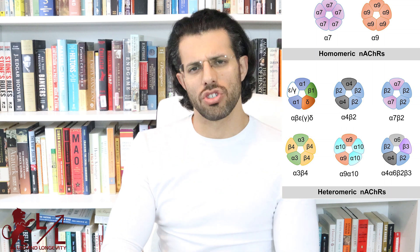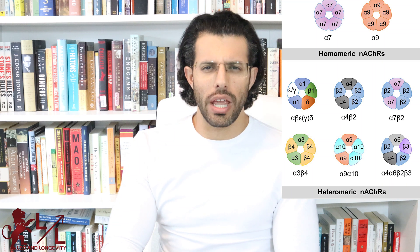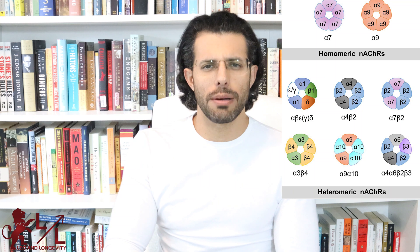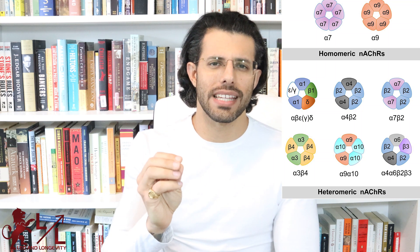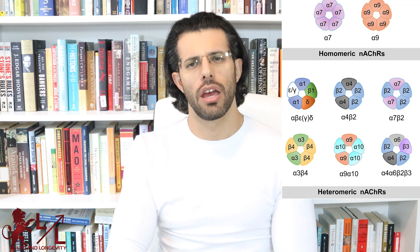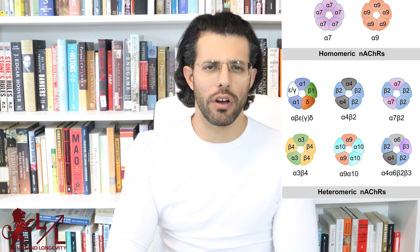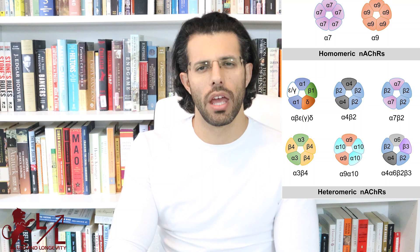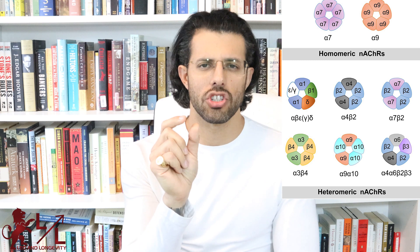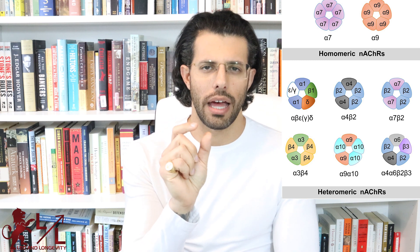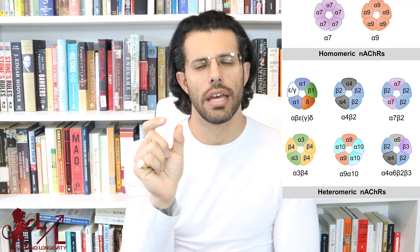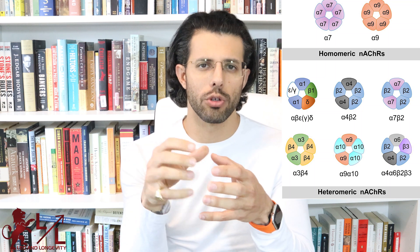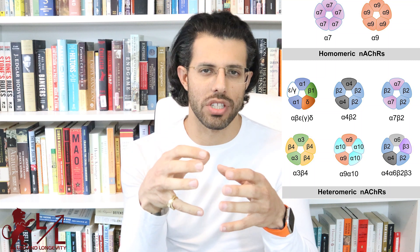So that's the basic introduction. In mammalian brains, you'll find some common types. For example, the homomeric alpha-7 receptor is quite common. You'll also find the alpha-3, beta-4 receptor as quite common. Every time I mention an alpha-3 or beta-4, that means there's a certain number of alpha-3s and a certain number of beta-4s combined together without any other kind of genes on that receptor.